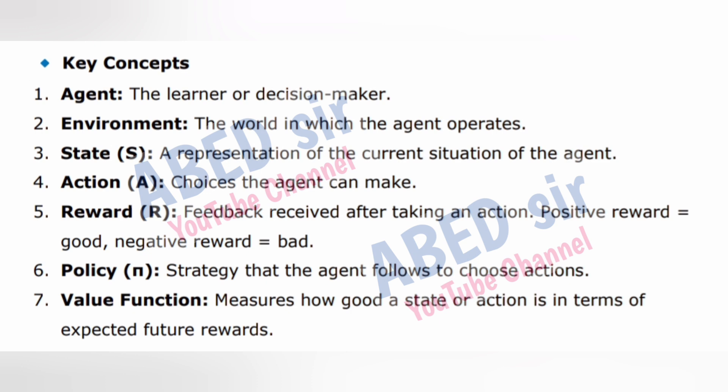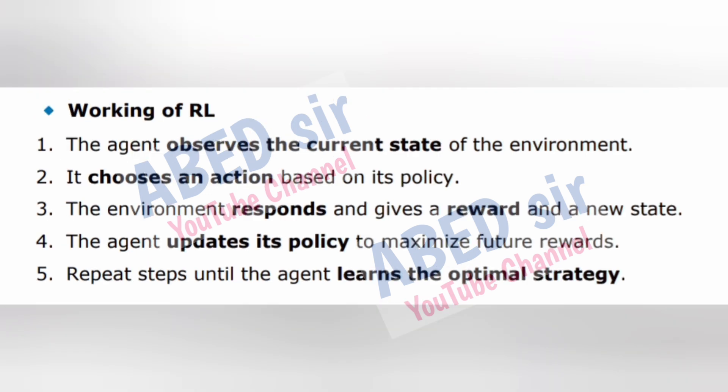Key concepts: 1. Agent — the learner or decision maker. 2. Environment — the world in which the agent operates. 3. State — a representation of the current situation of the agent. 4. Action — choices the agent can make. 5. Reward — feedback received after taking an action; positive reward is good, negative reward is bad. 6. Policy — strategy that the agent follows to choose actions. 7. Value function — measures how good a state or action is in terms of expected future rewards. Working of RL: the agent observes the current state, chooses an action based on its policy, the environment responds with a reward and new state, and the agent updates its policy to maximize future rewards.